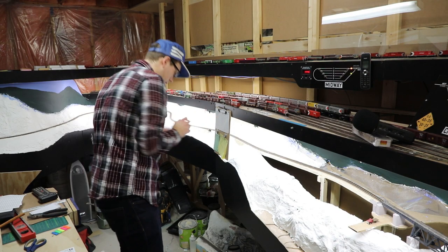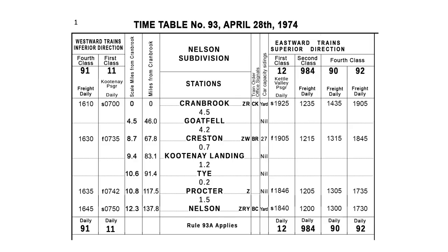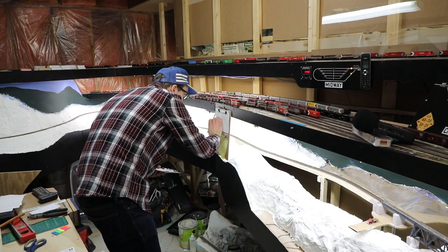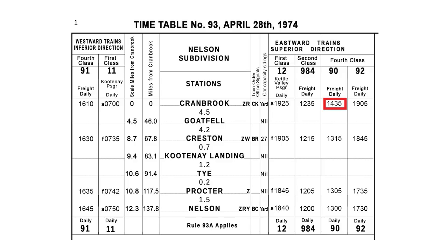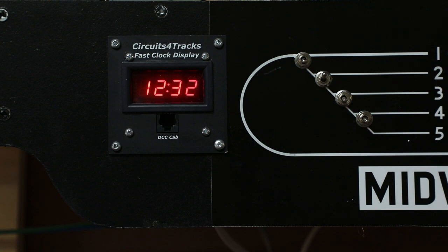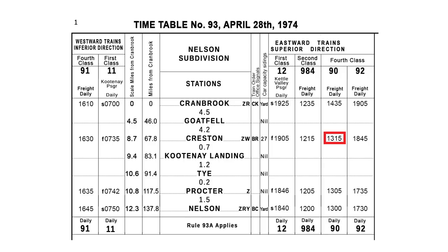Extra 4072 West needs to make sure there's nothing coming that has superiority over them. They consult the timetable. As a westward extra, they are inferior to all other directions and classes. Train 984, a second-class train, is the only train with right over them that might have arrived — we check the station register, and 984 has arrived at 12:28 PM. Number 90, a fourth-class train, is scheduled to arrive here at 14:35 and has right over us. That's a lot of time — assuming 15 miles per hour, it's 8.7 scale miles to Creston, round up to 10. We should make it in 40 minutes. It's 12:32 now, so we can make it to Creston by 1:12. Train 90 is scheduled into Creston at 1:15 — that's tight, but with our conservative calculation, we should make it. They sign the register and throttle up.